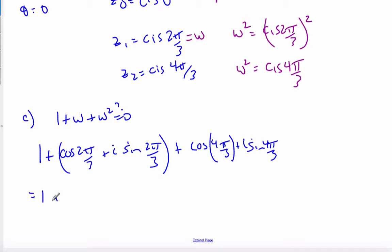Simplifying this, cosine 2π by 3 is a minus 1 half plus i root 3 over 2 positive plus this is again a minus 1 half and this is minus i root 3 over 2.